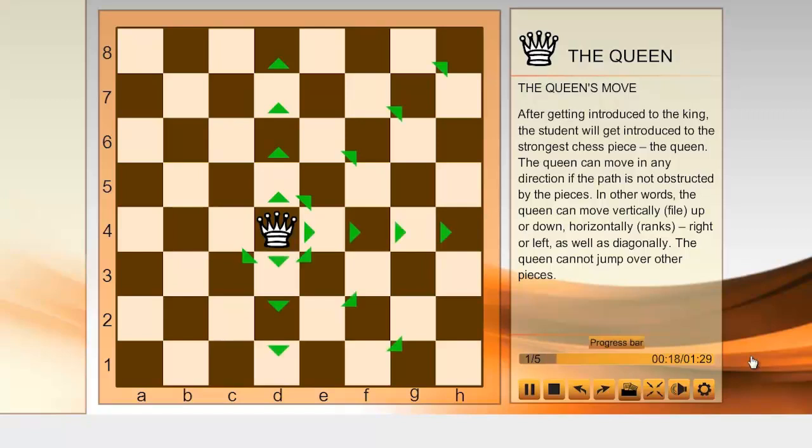The queen can move in any direction if the path is not obstructed by the pieces. In other words, the queen can move vertically, file, up or down, horizontally, ranks, right or left, as well as diagonally.